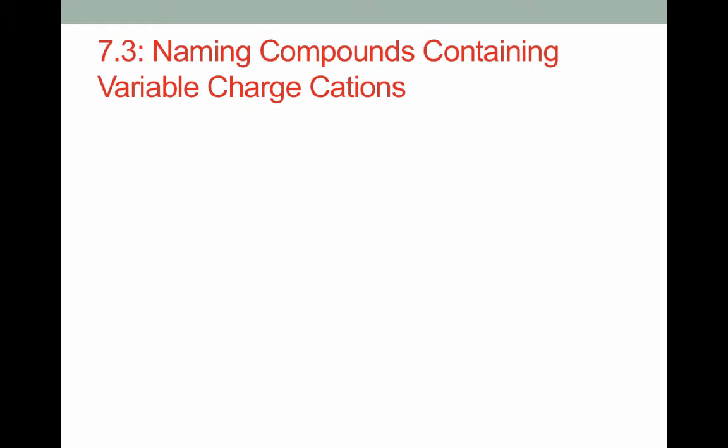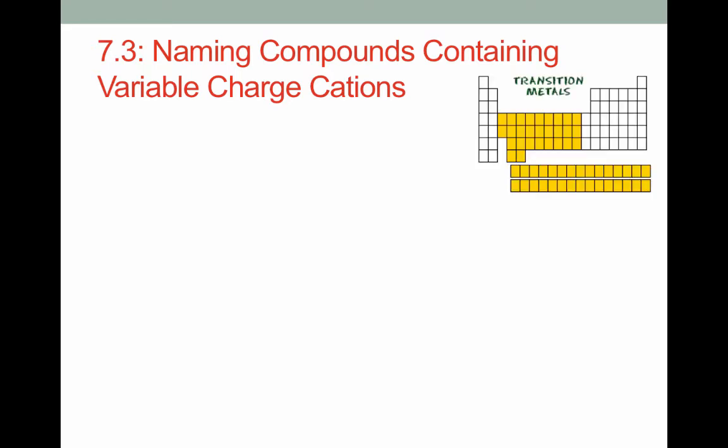Turning now to compounds containing variable charge cations, sometimes it's not easy to predict the charge on the cation from the periodic table. Elements called transition metals, which lie in the middle here, the yellow part, these are elements that don't have charges that can be predicted directly from their spot on the periodic table. Therefore we need to indicate what charge they have, because they could have all kinds of different charges.